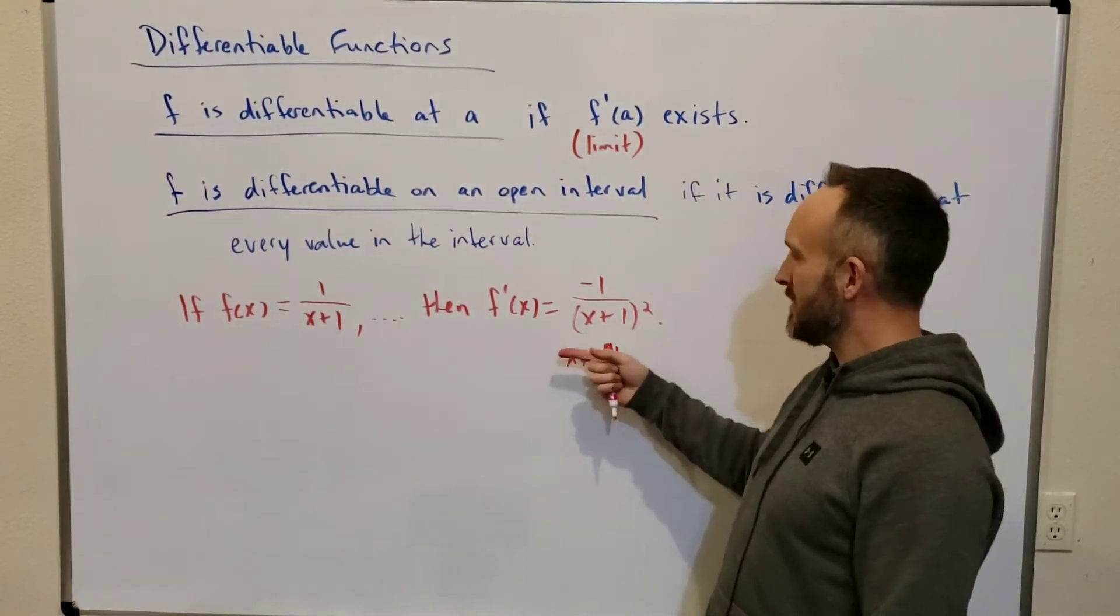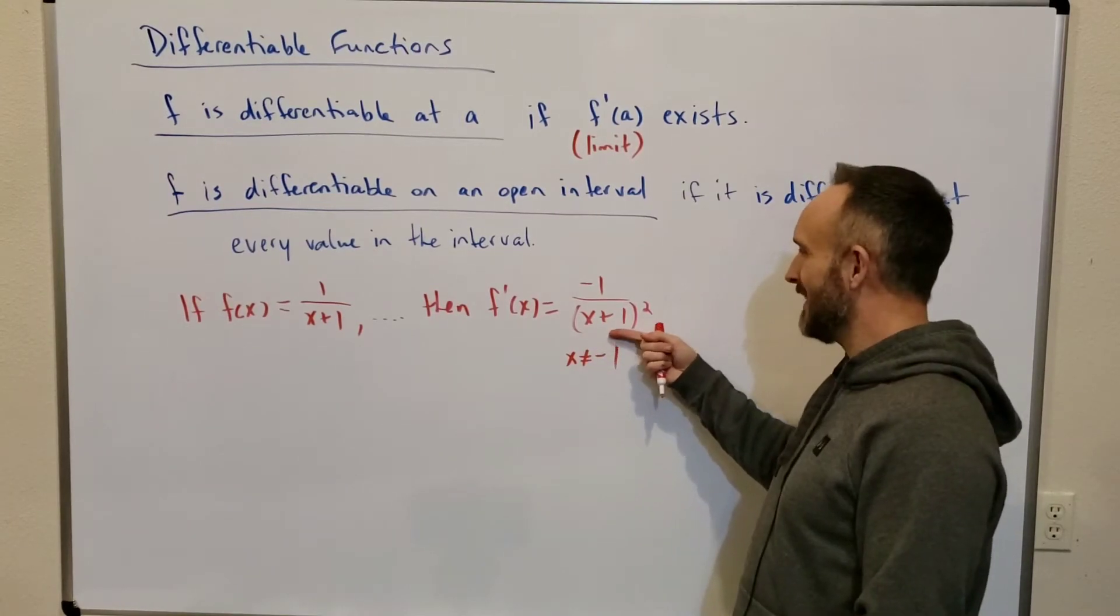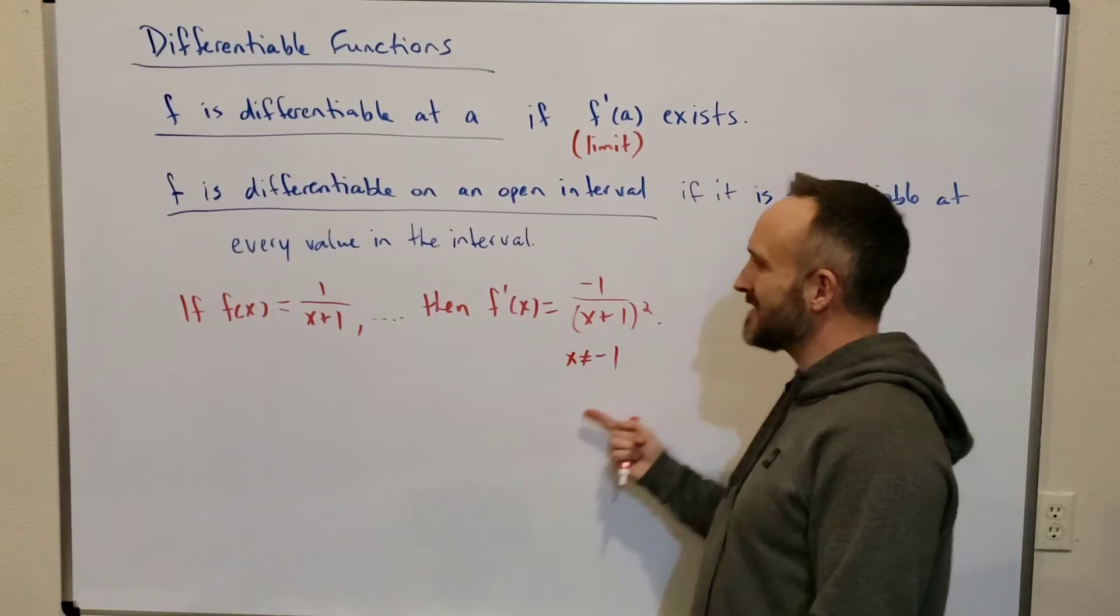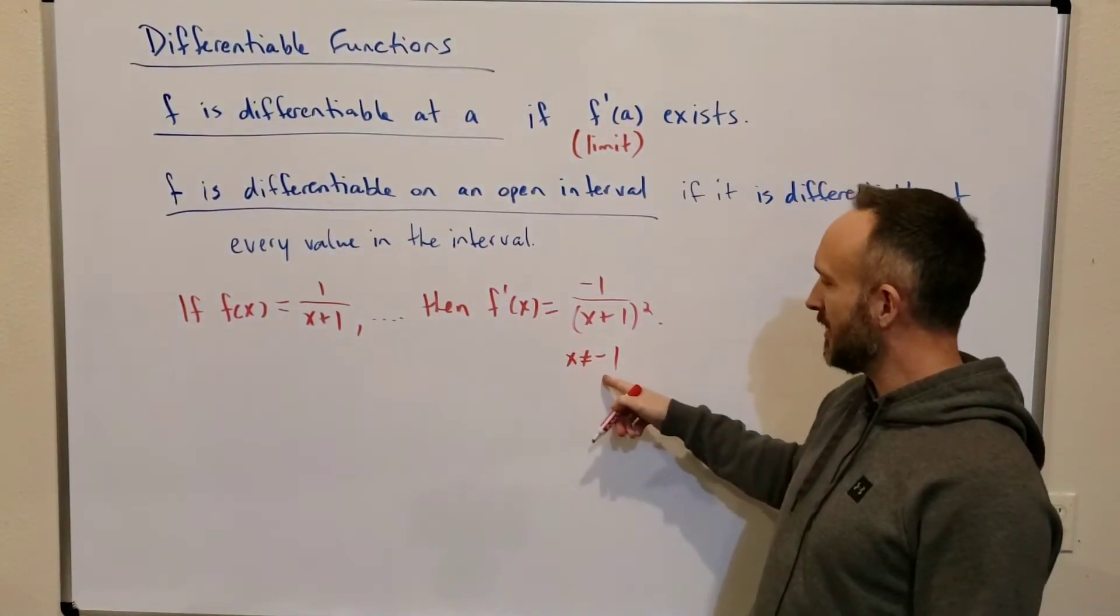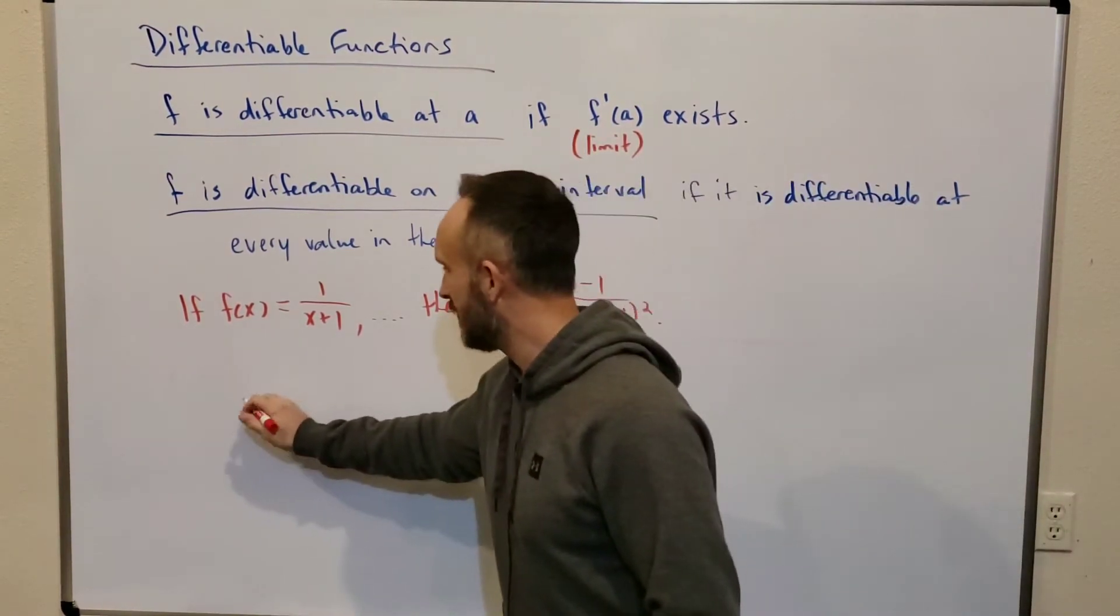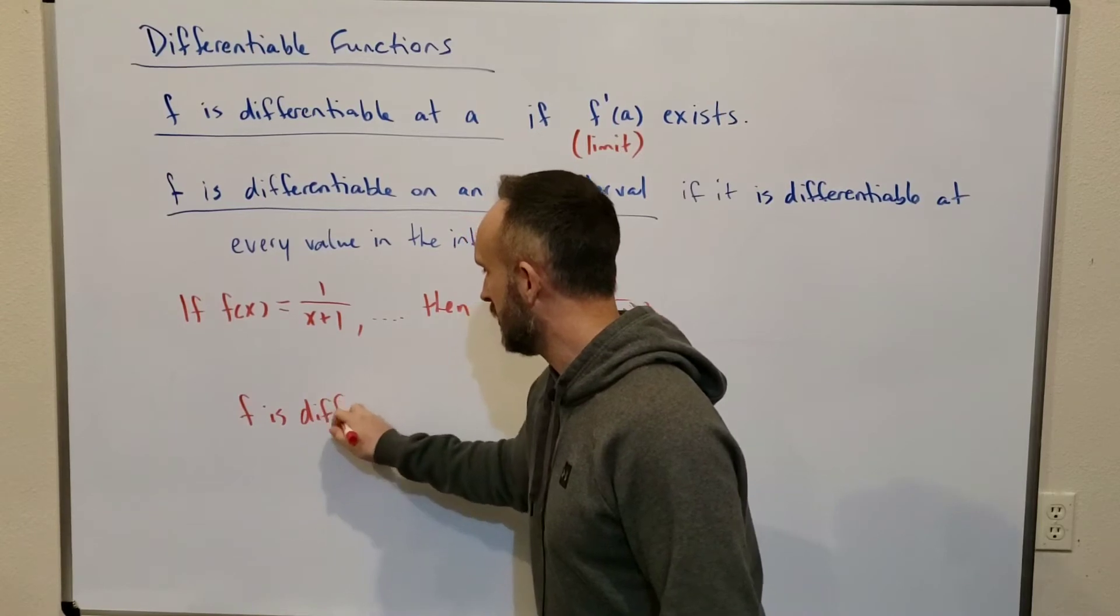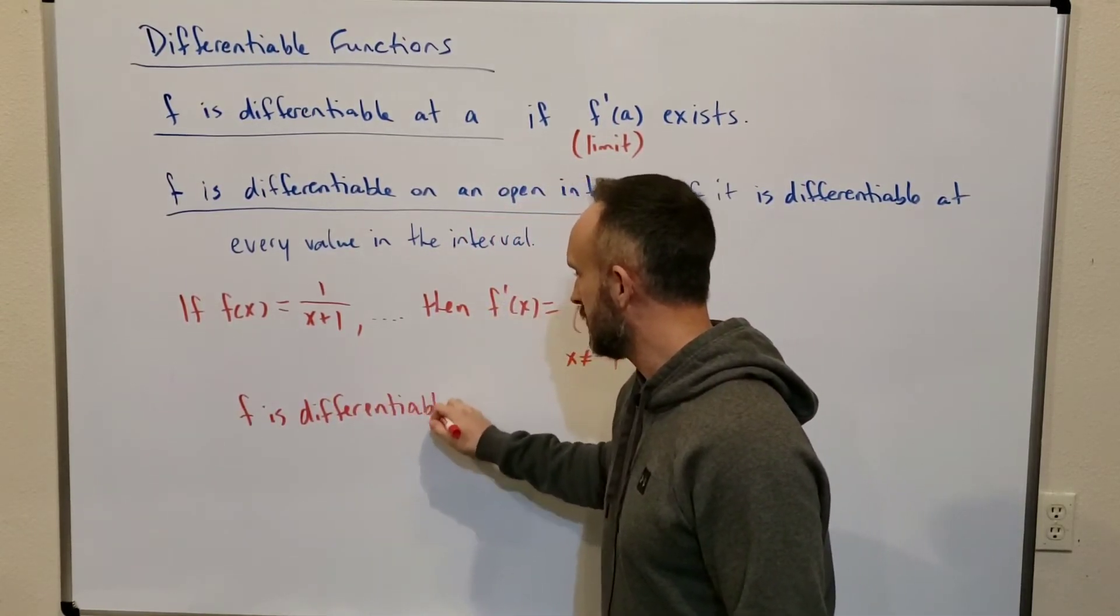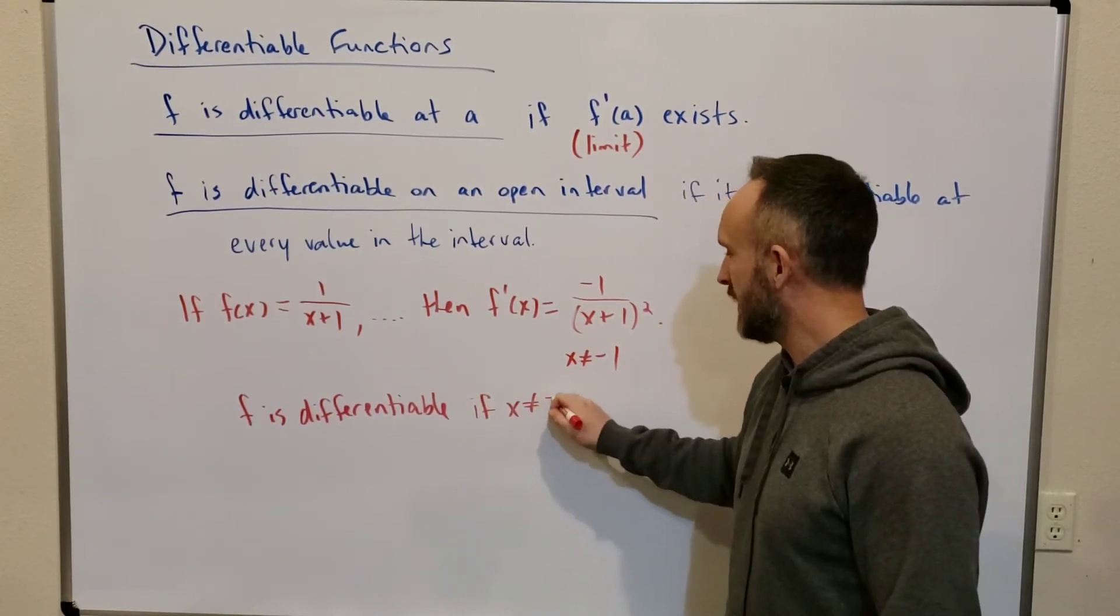But any other value for x, you could calculate the output of this formula. So what we say here is we go back. We see when f prime can be calculated. And then we go back to f and we can say, since the derivative of f can be calculated here, we say that f is differentiable if x does not equal negative 1.